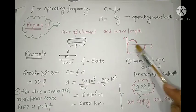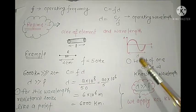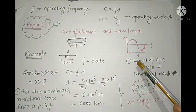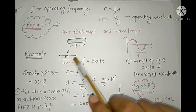The length is represented by L and the wavelength — the length of one cycle — is known as lambda.